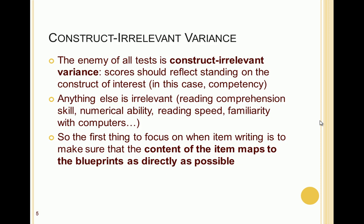An important concept in item writing and psychometrics is construct irrelevant variance, and it is the enemy of all tests. The goal is that scores should reflect standing on the construct of interest — competency, knowledge, or skills — and not on any additional variables such as race, gender, knowledge of trivia, or age. This also includes skills not involved in answering the questions: if you're testing knowledge of science, you don't want reading comprehension, numeric ability, or reading speed to influence how candidates answer. The first thing to focus on when item writing is to make sure the content of the item maps to the blueprints as directly as possible.